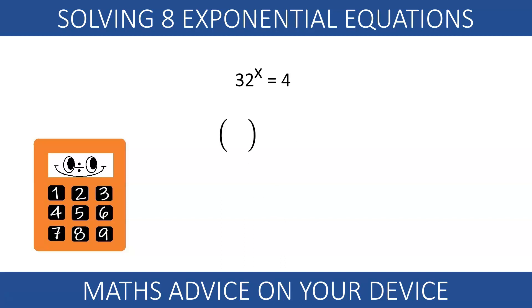In this equation, we write both 32 and 4 as a power of 2. Comparing exponents, x must be 2 over 5.